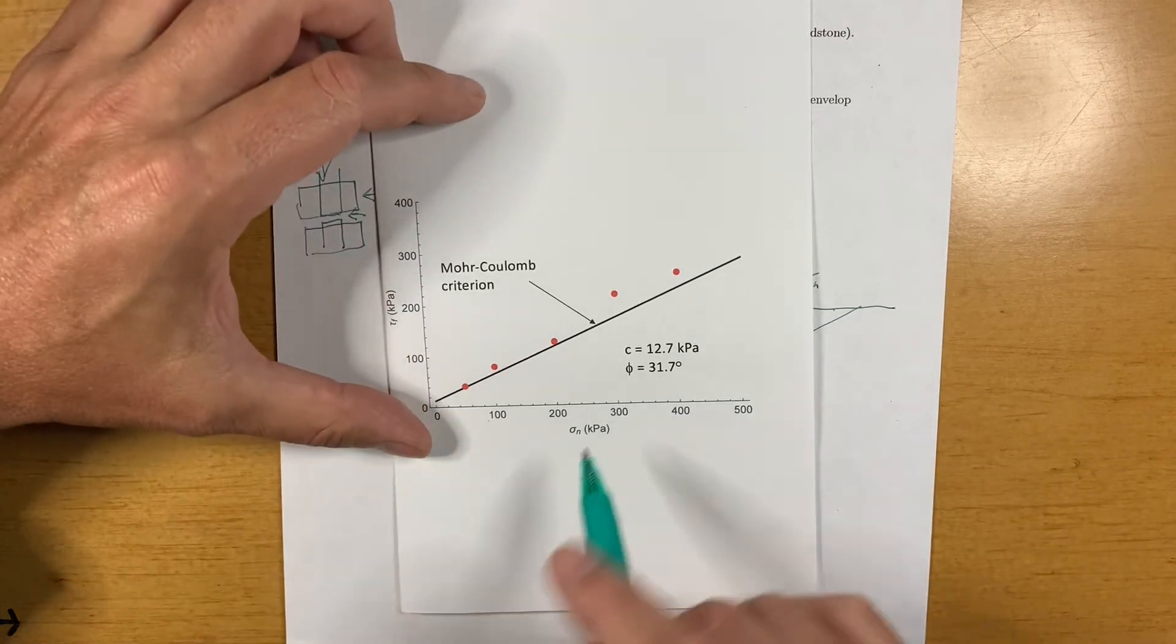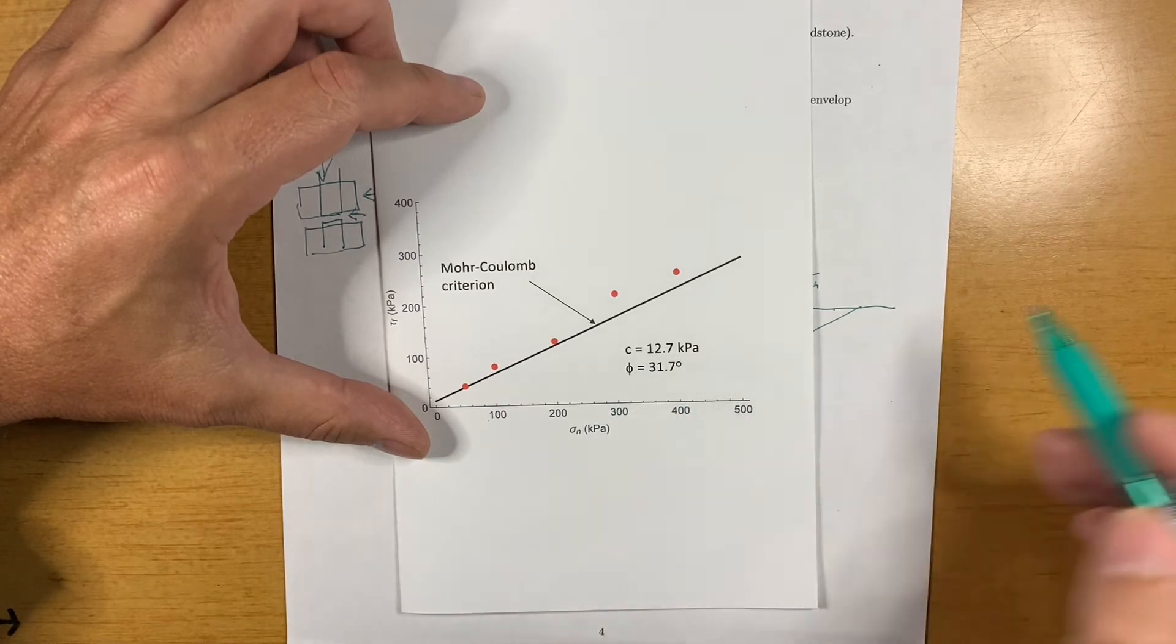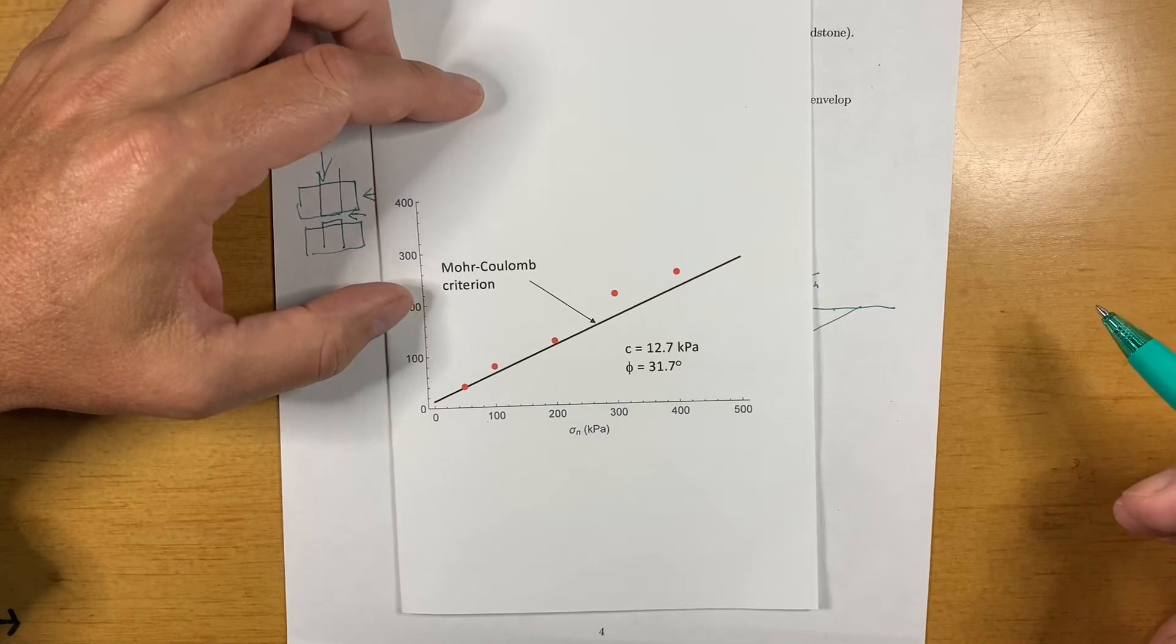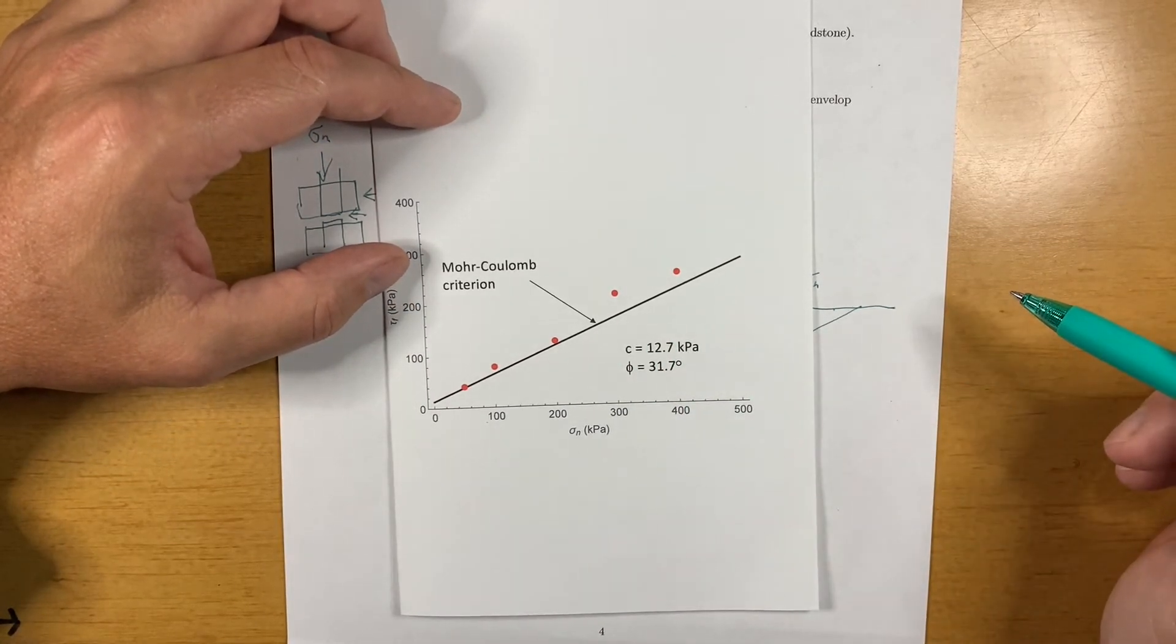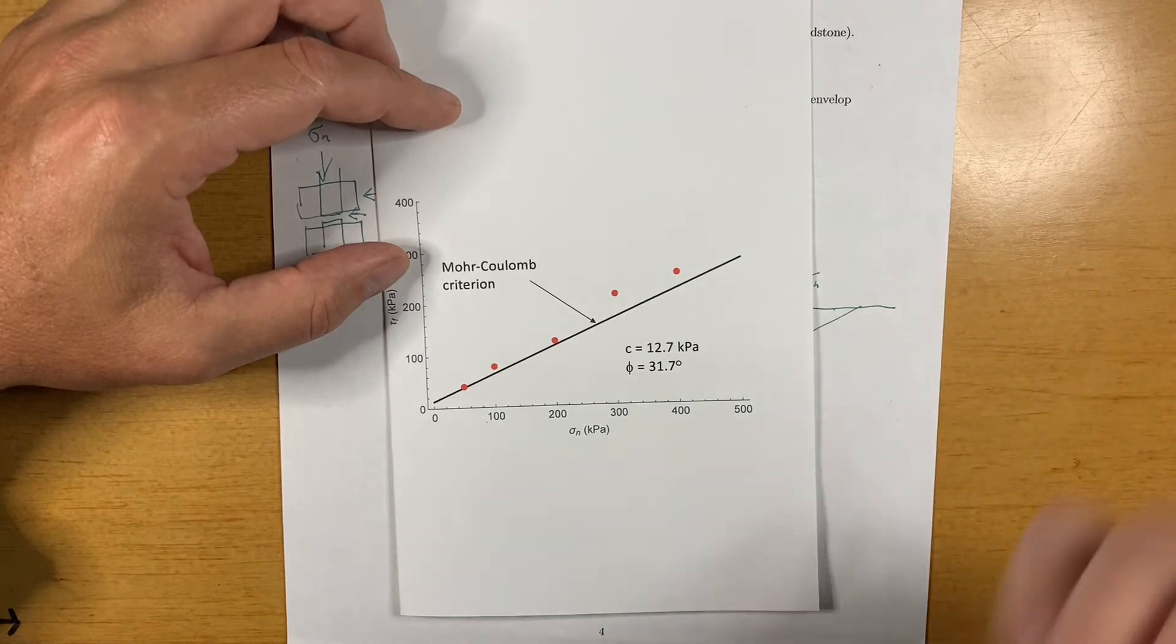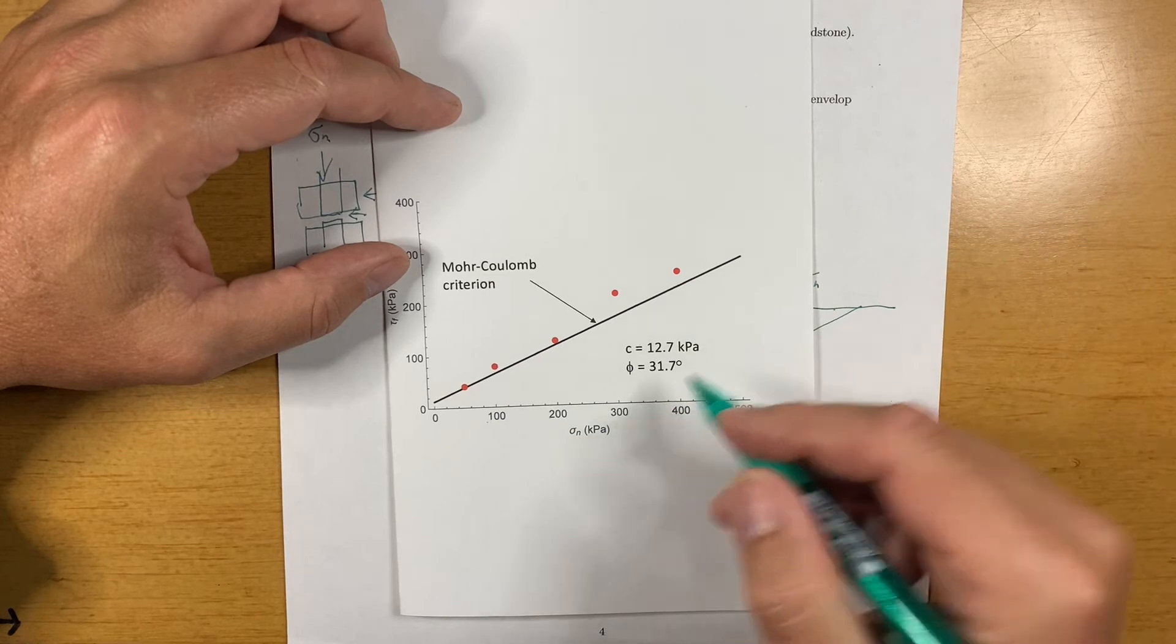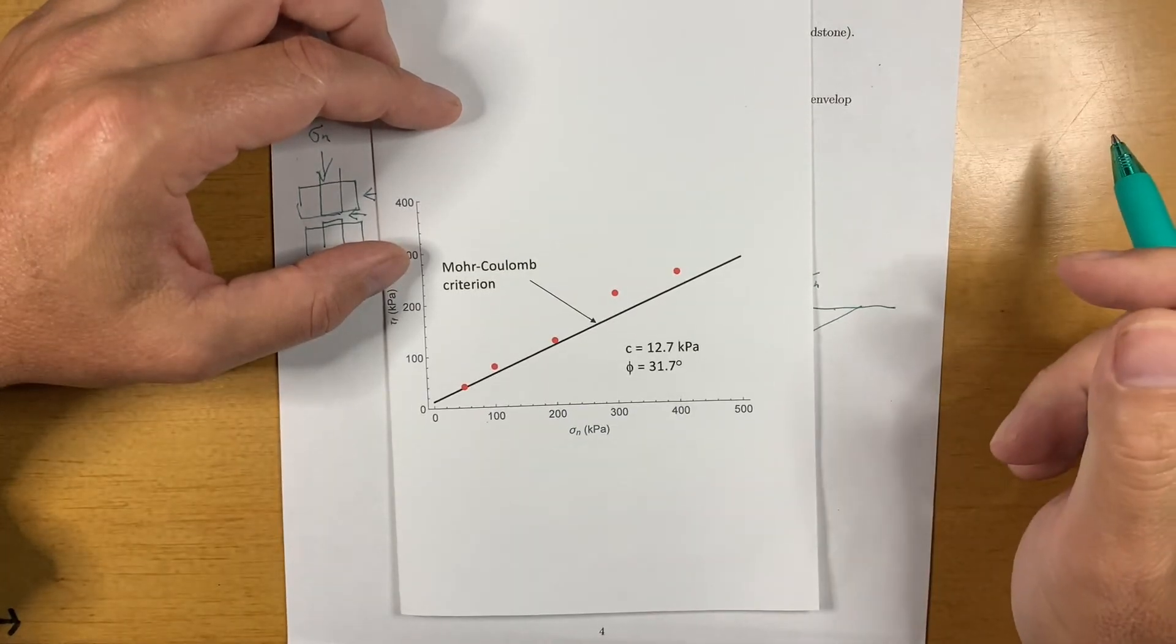So in this case, I got a cohesion of 12.7 kPa and a friction angle of 31.7 degrees. Now, what you'll want to do is compare this with the description of the rock joint, its roughness, what kind of condition it was in, what kind of infilling it had and see if this is a reasonable representation of those physical observations.